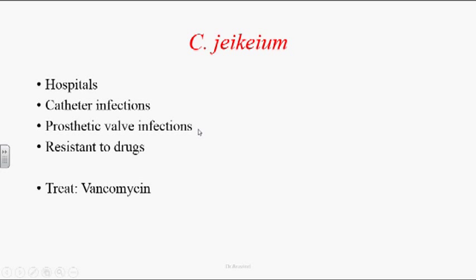Other species of Corynebacterium: Corynebacterium jeikeium is always found in hospital environments and can cause catheter infections and prosthetic valve infections. Because it lives in the hospital environment, it is resistant to the majority of drugs. The treatment for Corynebacterium jeikeium is vancomycin.